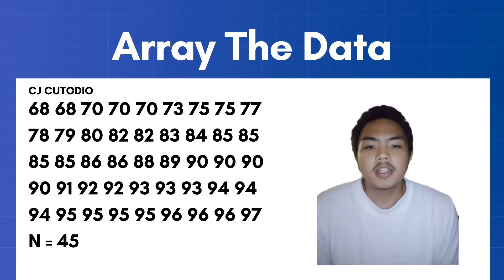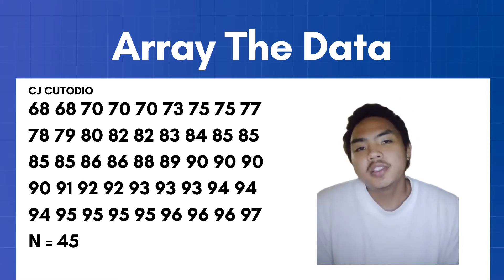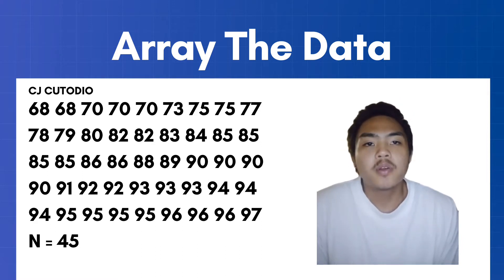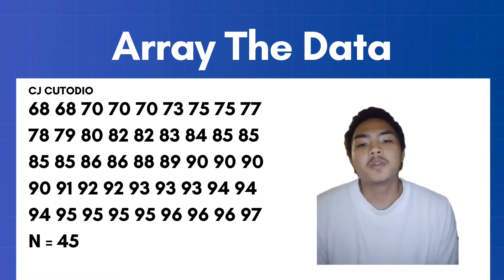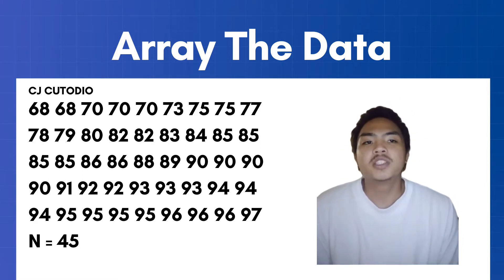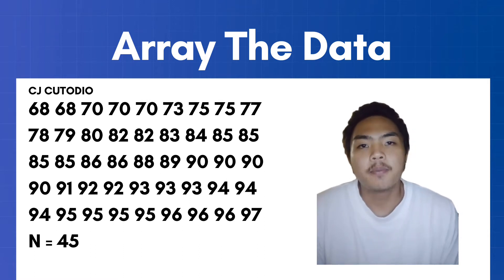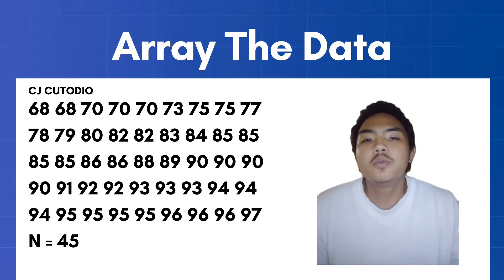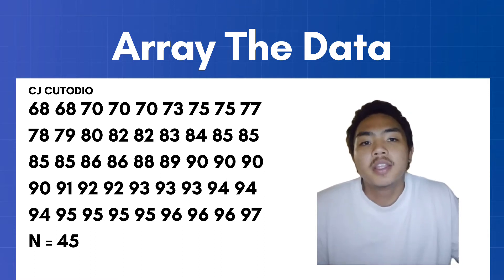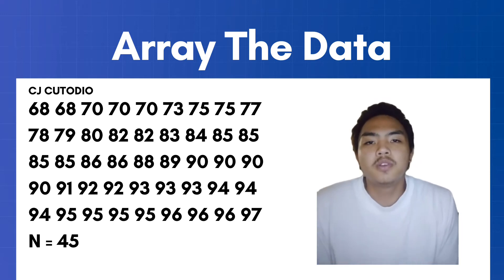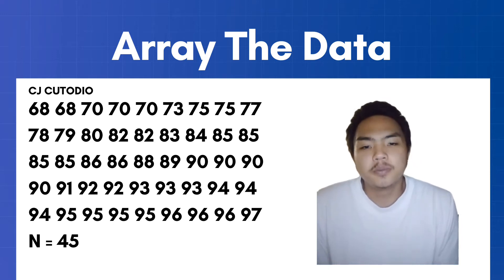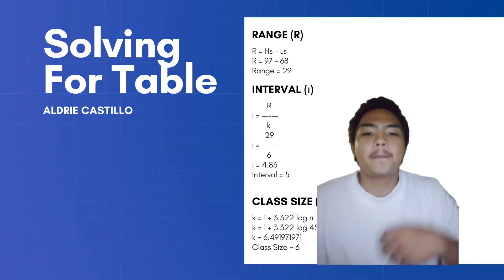In our data, the N or total number of data is 45, because if we count all of our listed data, 45 is the answer. After we array the data, we must proceed to solving the frequency distribution table.